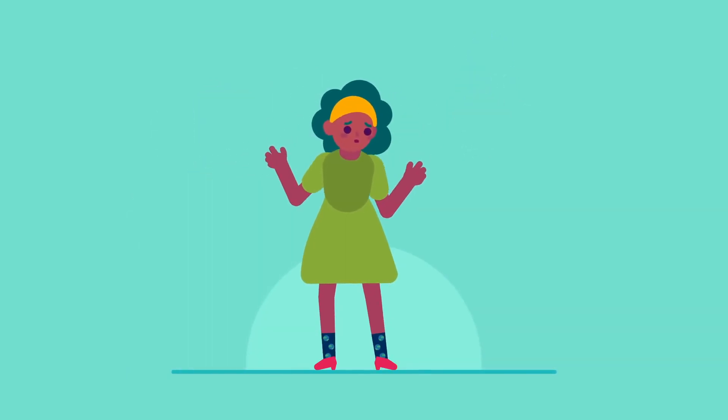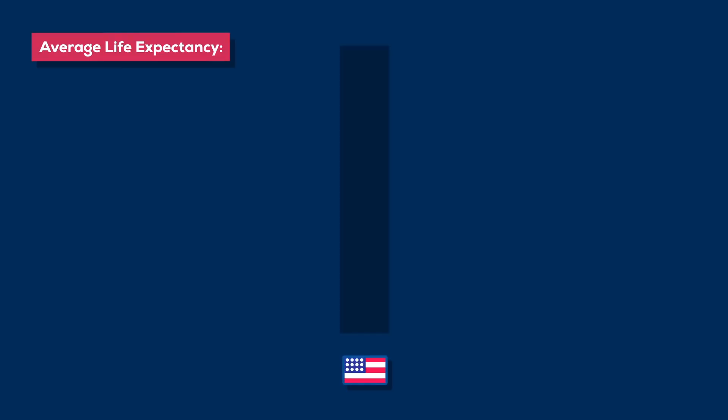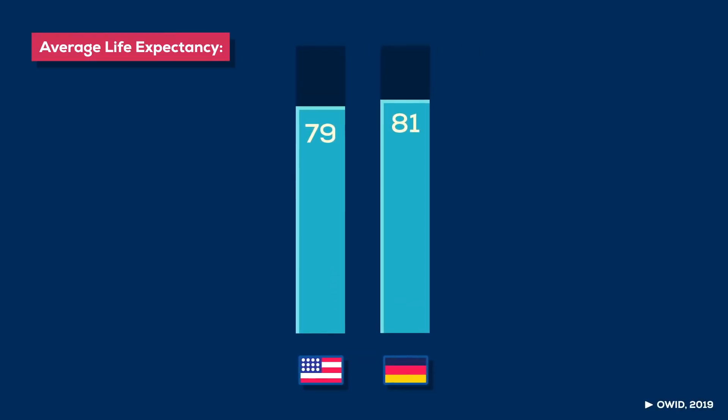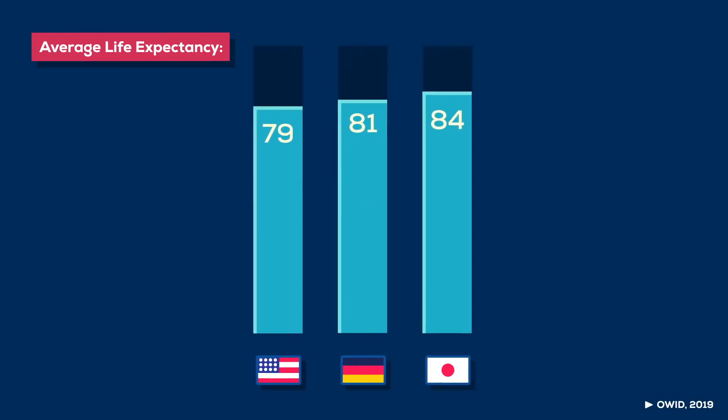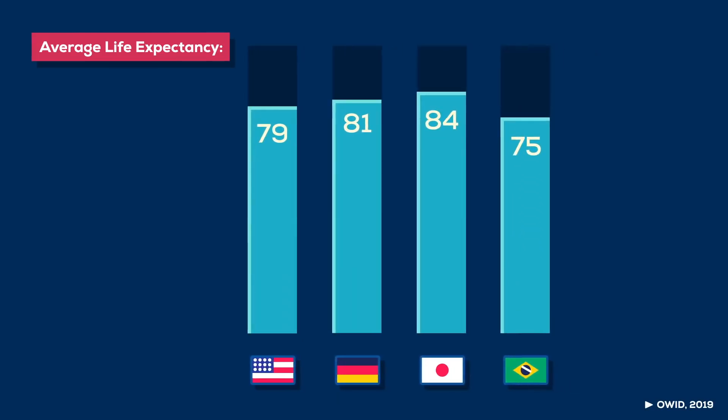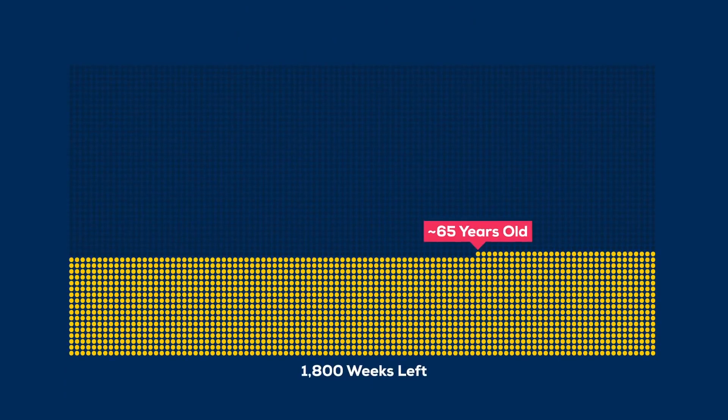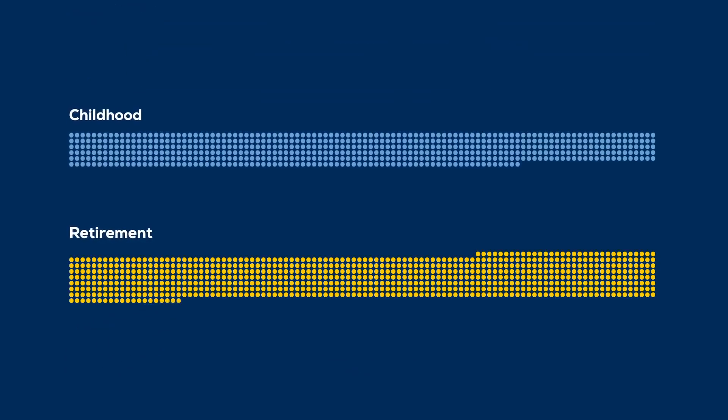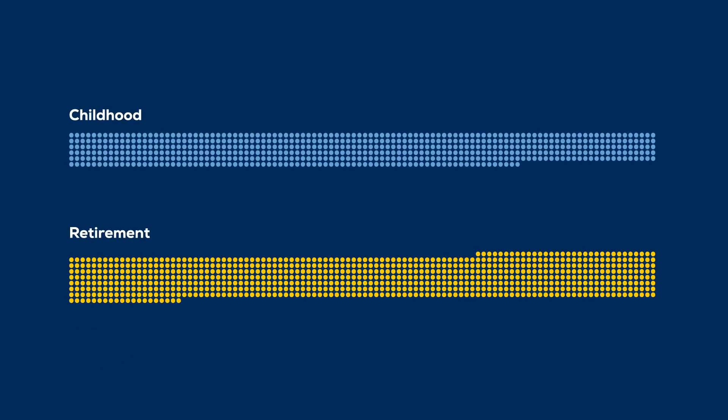19 out of 20 people will not live to 100. The average lifespan in the US is 79, in Germany it's 81, in Japan 84, in Brazil it's 75. If you die at age 80, which is still not bad, you only have 780 weeks of freedom after you retire. That's roughly as many weeks of freedom as an old person as you spent as a child.